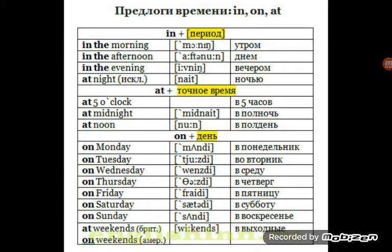Когда же мы используем on? Предлог on используется плюс определённый день. Это может быть понедельник, вторник, среда и так далее: on Monday, on Tuesday, on Wednesday, on Thursday, on Friday, on Saturday, on Sunday. А выходные — weekends — мы не говорим on weekends в британском варианте; там будет at weekends. Так как здесь мы изучаем американский вариант, мы будем говорить on weekends. Это не будет считаться ошибкой.